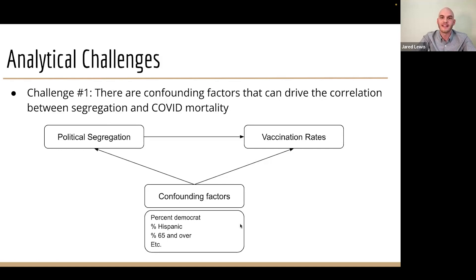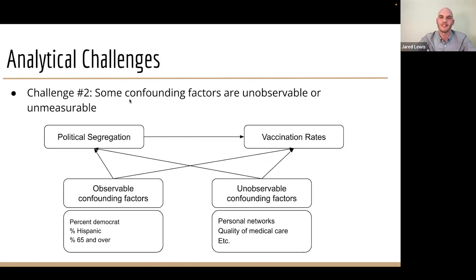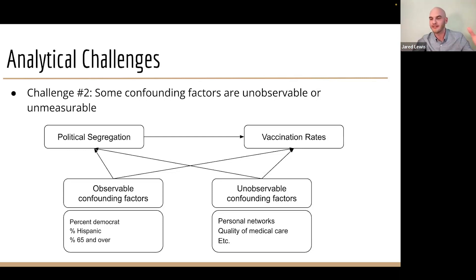We want to add other variables to take the influence away from what we're seeing in the coefficient so that we see just the influence of political segregation on vaccination rates as purely as we can. But another challenge is that some confounding factors are unobservable or unmeasurable — for example, personal networks. We don't know how often an individual talks to people outside of their social group, what news they watch, or the quality of medical care. These could also influence this relationship.